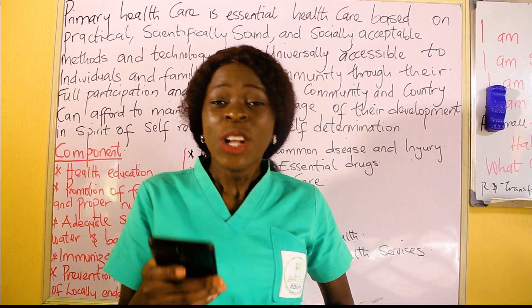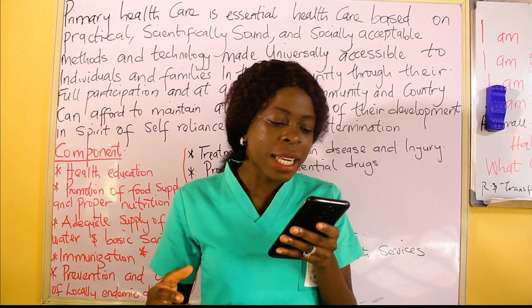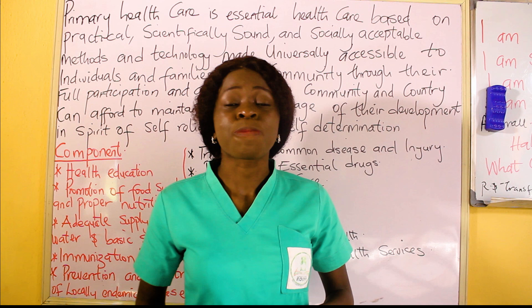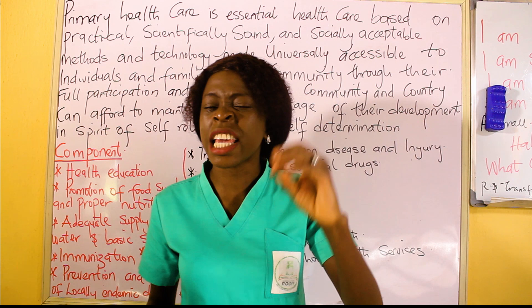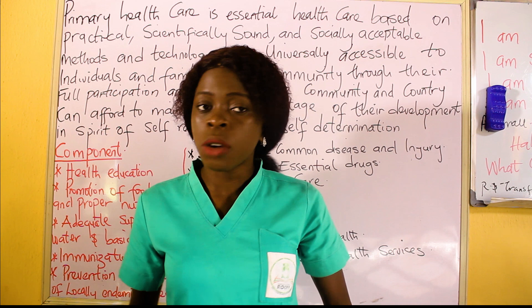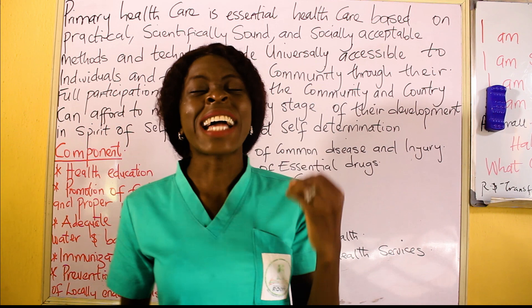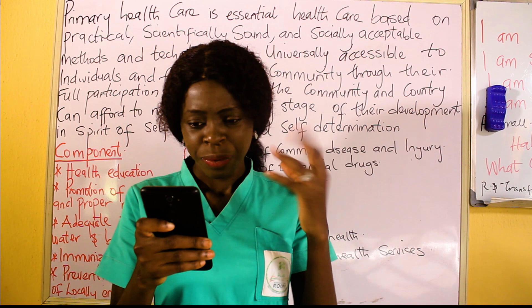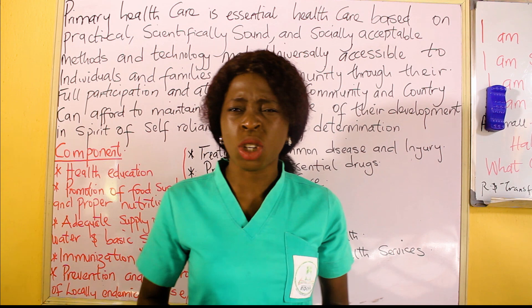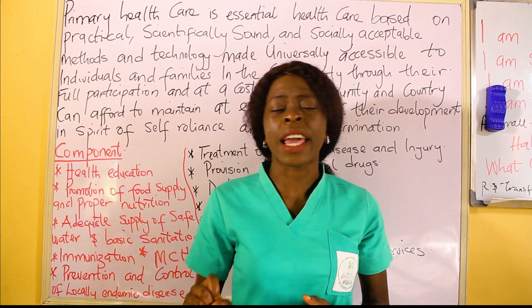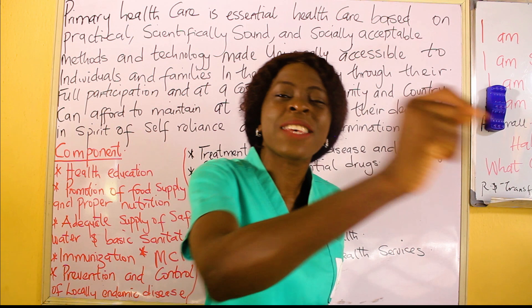The first principle is equitable distribution of resources. Resources coming to the primary health care must be distributed equally, neglecting gender, age, religion, and cultural background. The second principle is community participation. For something to be called primary health care, the community has to participate actively — not shabbily — in the care.